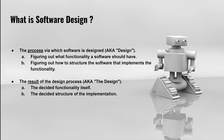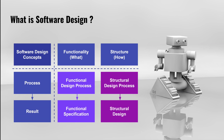When people talk about software design, they typically refer to either the software design process itself or the result of that process. The goal of the process is to figure out what functionality the software should have, as well as how to structure the implementation of that functionality. More concretely, you can break software design up into four parts: first, a functional design process; second, a functional specification, which is the result of the functional design process; third, a structural design process; and fourth, a structural design, which is the result of the structural design process.